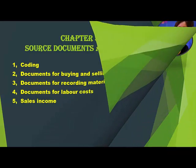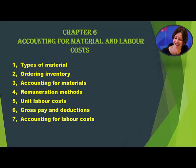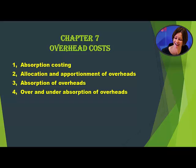Chapter 5 also covers Sales Income. Chapter 6: Accounting for Material and Labor Costs. Topics include: Types of Material; Ordering Inventory; Accounting for Materials; Remuneration Methods; Unit Labor Costs; Gross Pay and Deductions; and Accounting for Labor Costs.